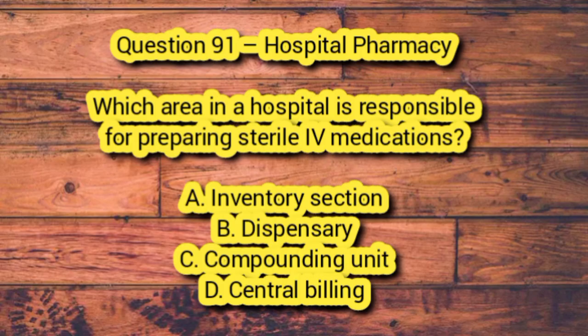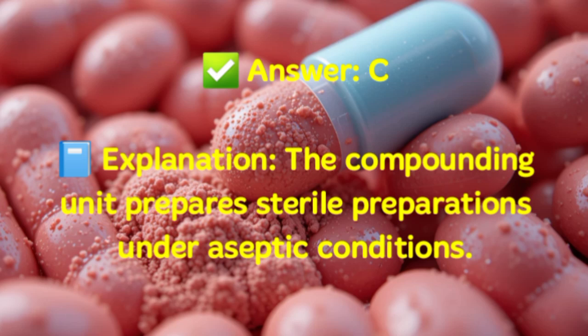Question 91 – Hospital Pharmacy. Which area in a hospital is responsible for preparing sterile IV medications? A. Inventory Section. B. Dispensary. C. Compounding Unit. D. Central Billing. Answer: C. Explanation: The compounding unit prepares sterile preparations under aseptic conditions.